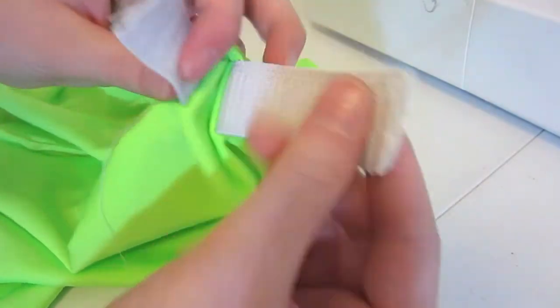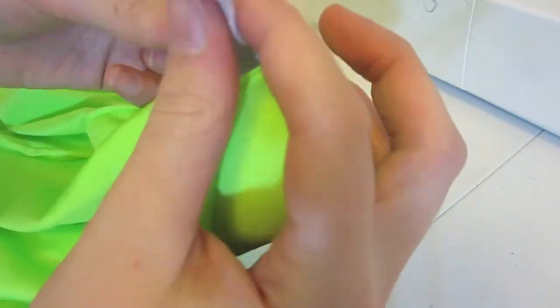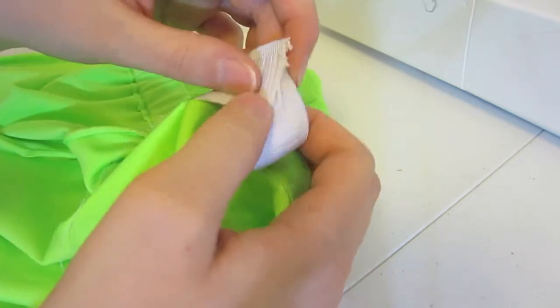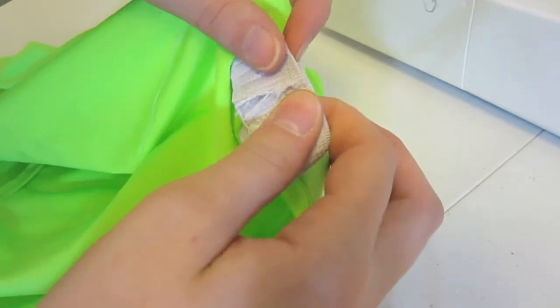Once you have the elastic encased all the way around, you're going to want to try them on and see how they fit and that's going to determine where you sew the elastic.